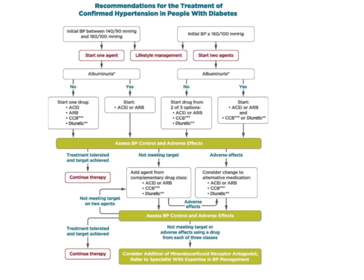Again you assess and check. If the blood pressure still does not come down, then you consider addition of a mineralocorticoid receptor antagonist, or you refer the patient to a cardiologist who can make a better diagnosis and decide on the treatment plan to modify the drugs. The patient has to be monitored — the first month is important, and after that you monitor every 3, 6, 9, and 12 months, modifying the drug therapy accordingly.